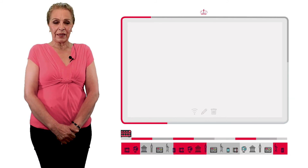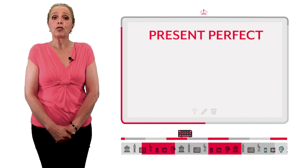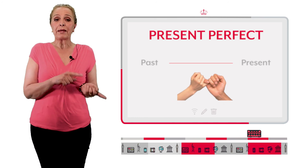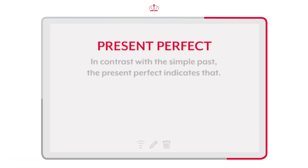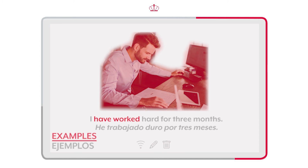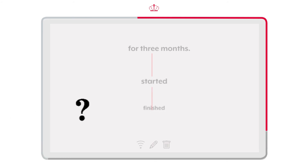Now we are going to look at a new topic: the present perfect. Ahora vamos a ver el presente perfecto. We use the present perfect to show a link between the past and the present. Utilizamos el presente perfecto para mostrar una unión entre el pasado y el presente. En contraste con el pasado simple, el presente perfecto indica que empezó una acción en el pasado, pero que aún no ha concluido. I have worked hard for 3 months. He trabajado duro por 3 meses. If you notice, we say when the action started but don't say when it ended. Si se fijan, decimos cuando empezó la acción, no cuando terminó.